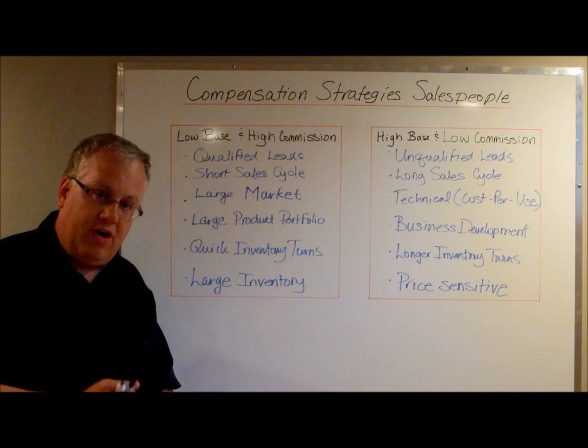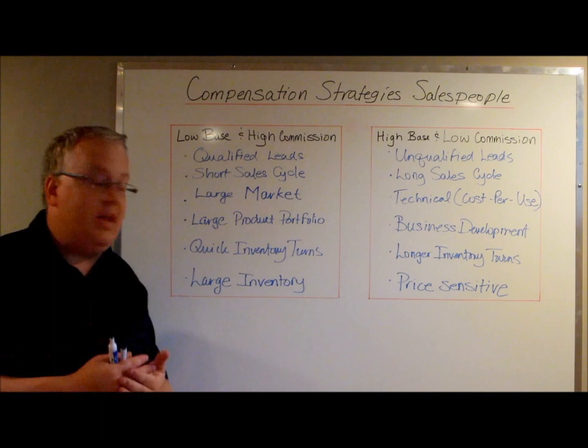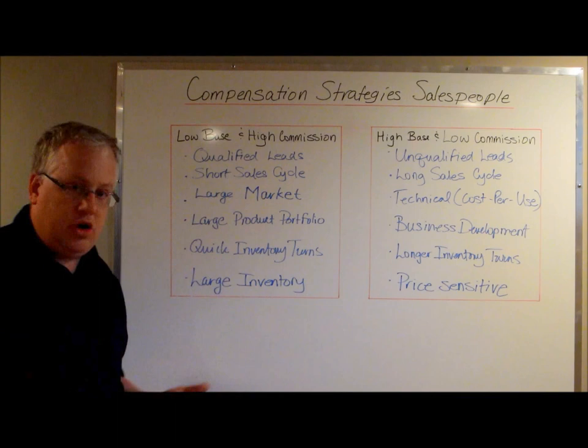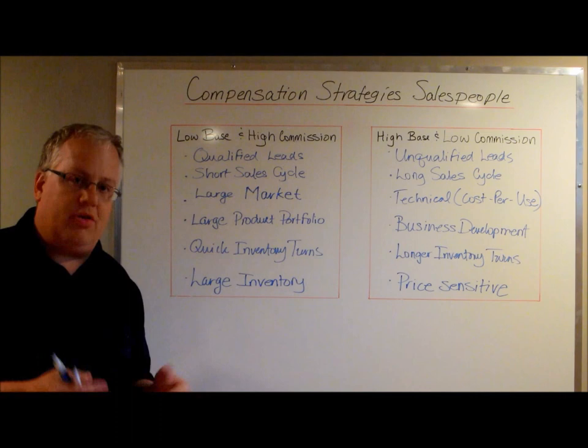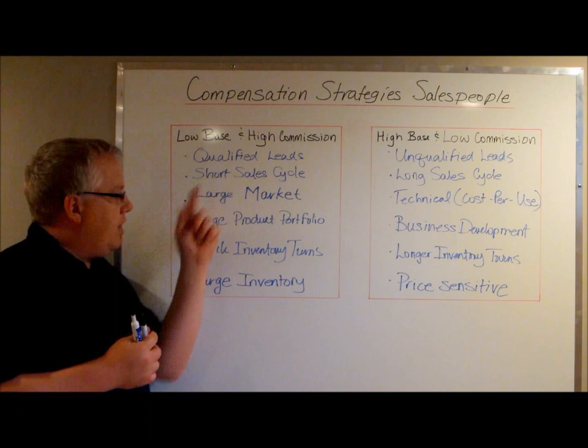You don't have to qualify the lead or the opportunity — it's done for you. It's almost always associated with a short sales cycle. These individuals get on the phone, they have an opportunity, and it's an immediate sales cycle because they operate in a large market with huge opportunities — sometimes almost too big to cover. They've got a large product portfolio, A to Z, all kinds of product offerings, and quick inventory turns. Short sales cycles and quick inventory turns go hand in hand.